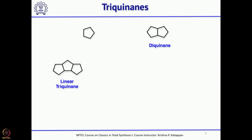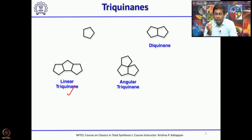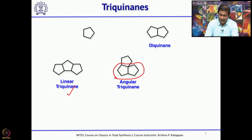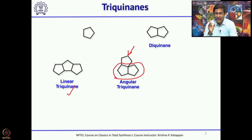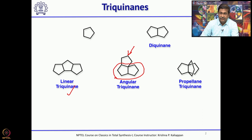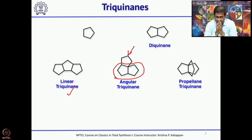If 3 five-membered rings are fused, then there are 3 possibilities. One, they are fused in a linear fashion — those are called linear triquinines. If you add one more 5-membered ring to the diquinine in an angular fashion, they are called angular triquinines. And if the third 5-membered ring is attached such that it looks like a propellane, that is the third category: propellane-type triquinines.